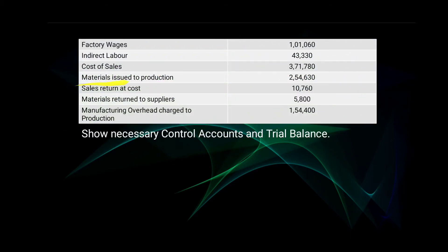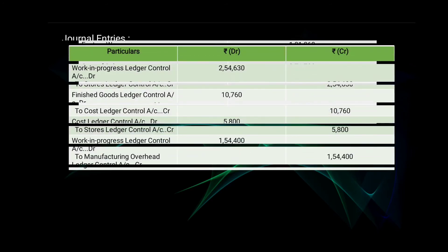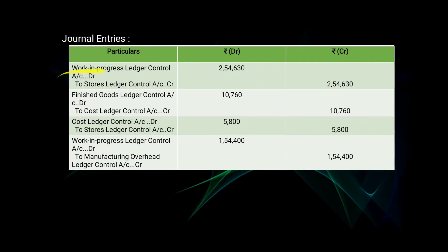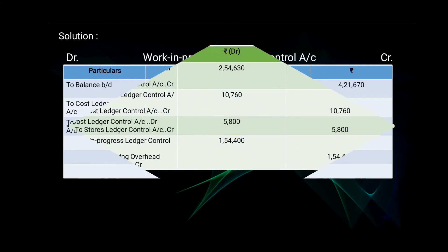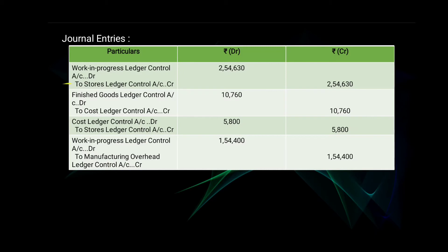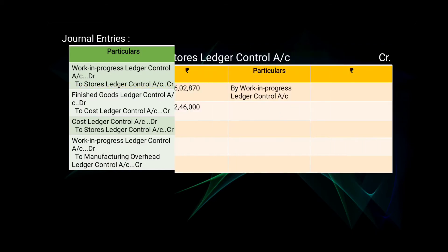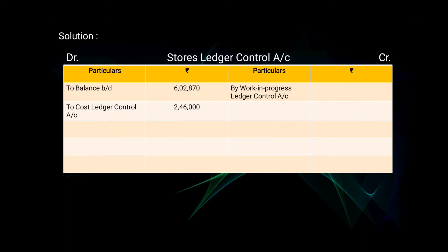Next, materials issued to production — 2 lakh 54,630. The journal entry was Work in Progress Ledger Control Account debit, to Stores Ledger Control Account — 2 lakh 54,630. The first effect is in Work in Progress Ledger Control Account, and the second effect is given in Stores Ledger Control Account as 'by Work in Progress Ledger Control Account — 2 lakh 54,630.'